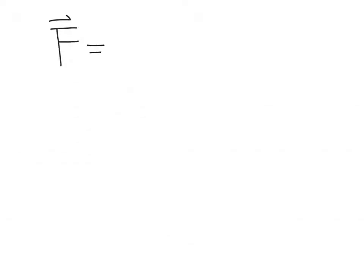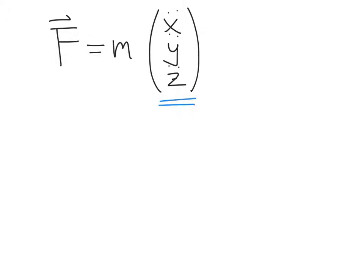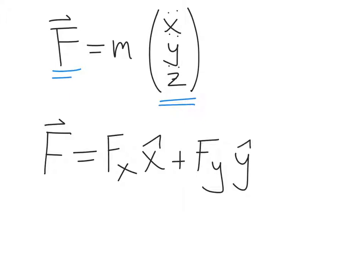Our force equals M times the R double dot vector, written as a column vector of x double dot, y double dot, and z double dot. Newton's second law, written as a vector equation, is really three different equations. We have three components for the acceleration vector on the right-hand side, and correspondingly three components for the force vector — resolved into x hat, y hat, and z hat. In reality, when you write Newton's second law, you're writing three equations all at once.